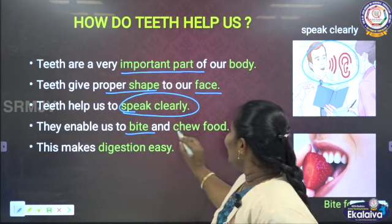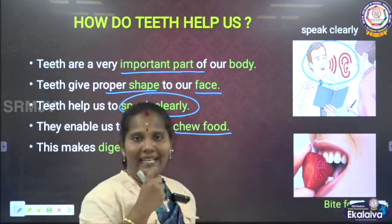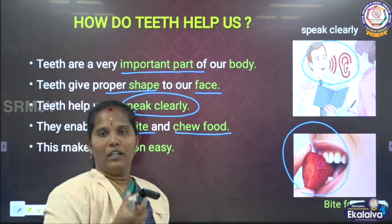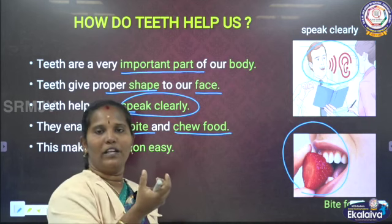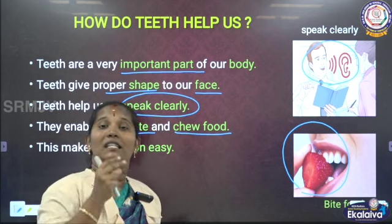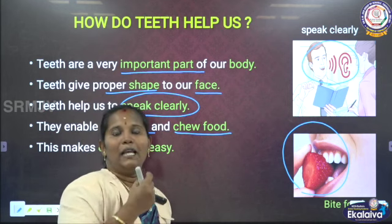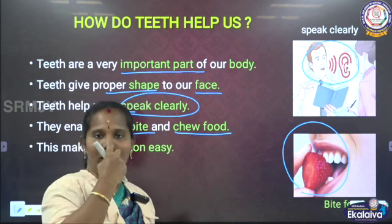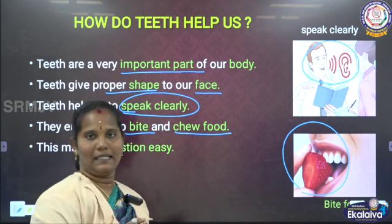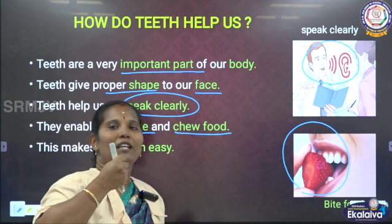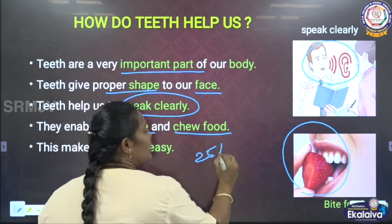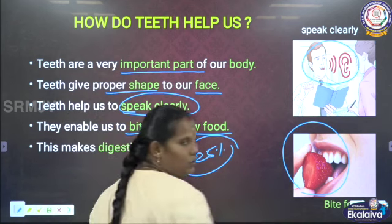Teeth enable us to bite and chew food. Without biting and chewing food, we cannot eat. If you are having any fruits, vegetables, or any food, you cannot swallow it directly. It is very difficult to swallow as well as very difficult for digestion. So teeth help us bite the food, converting large food particles into small particles. 25% of the digestion takes place in our mouth.